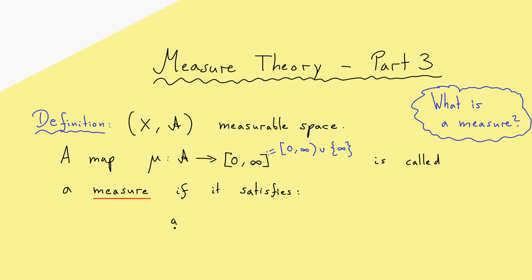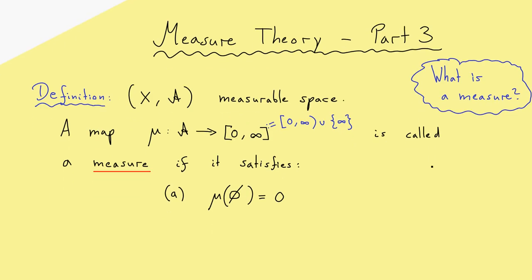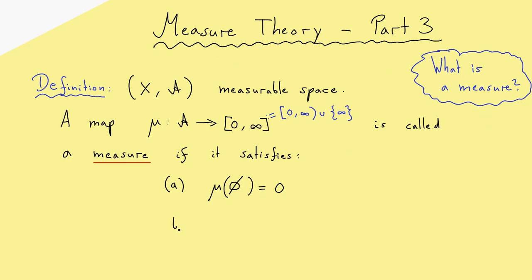From this we immediately get our first property. We know the empty set is a subset of X and is in every sigma algebra A. Therefore we want to measure the empty set and give it a volume. The only sensible volume for the empty set is zero — if there are no elements involved, the generalized volume should be zero.